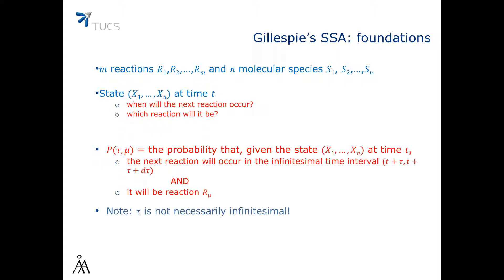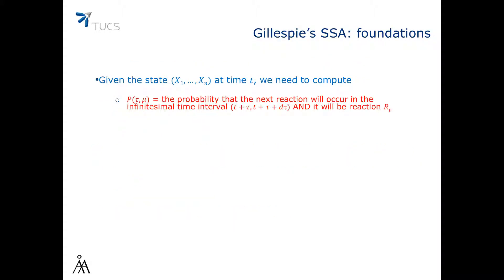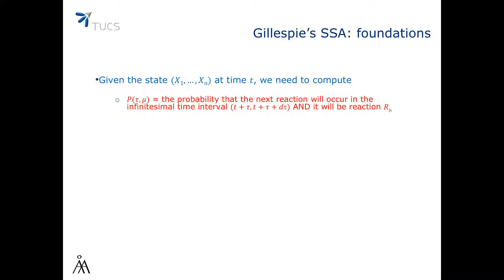It's important to note that tau in this case is not necessarily infinitesimal. Let's denote by H_mu the number of distinct combinations of reactants for reaction R_mu in the state at time t plus tau. Remember that this is the same state as that at time t, because no reaction has occurred from t to t plus tau.